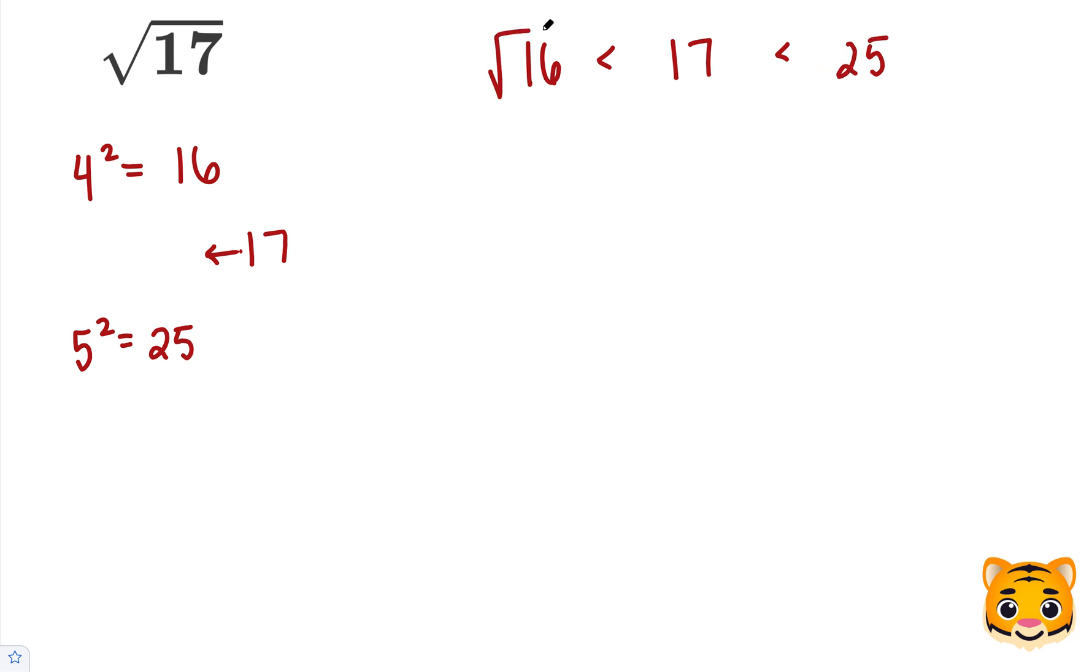Now we can take the square root of all of these values to get the square root of 16 is less than the square root of 17, which is less than the square root of 25.